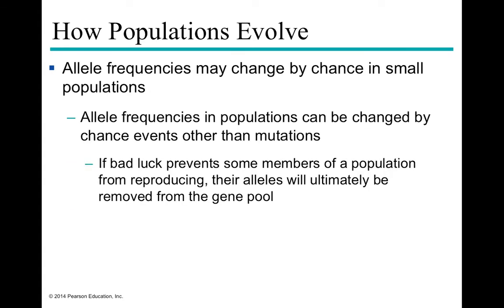If gene flow is blocked between populations — by a canyon, forest, or desert — genetic differences that accumulate over time due to different selective pressures can become so large that speciation occurs, meaning population A and population B can no longer interbreed and become entirely new species. Population size also matters because there is always a percentage of bad luck — seeds landing in a parking lot, flowers burned before pollinating, or organisms killed by flood or drought before reproductive age.